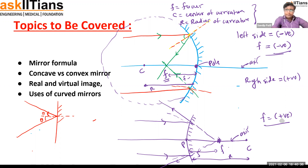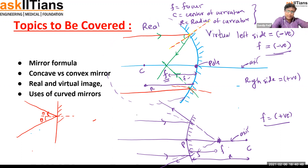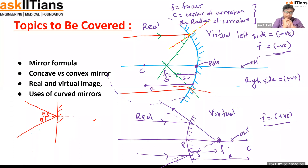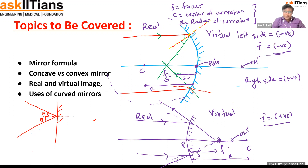Also remember: for any mirror — whether convex or concave — the side in front of the mirror is called the real side, and the side behind the mirror is called the virtual side. We saw in the plane mirror that the image we get is virtual because it appears to be inside the mirror. These real and virtual sides are important for understanding where images form.